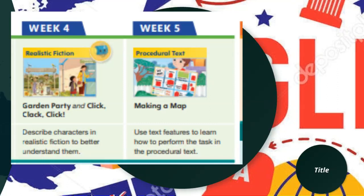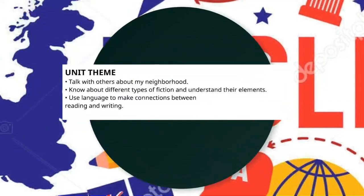In week five, it's a procedural text. We will read Make a Map and use text features to learn how to perform tasks in a procedural text. The unit goal is: we will talk with others about the neighborhood, learn about different types of fiction and understand their elements, and use language to make connections between reading and writing.